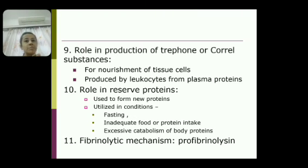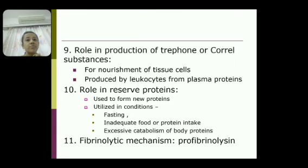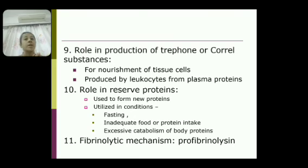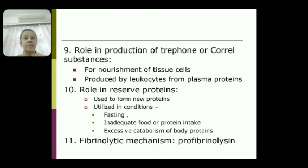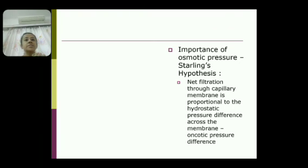Another function is the fibrinolytic mechanism. Fibrinolysin is a plasma protein present in inactive form as profibrinolysin. When fibrin meshwork is formed, profibrinolysin gets activated to form fibrinolysin, which causes lysis of the fibrin meshwork.